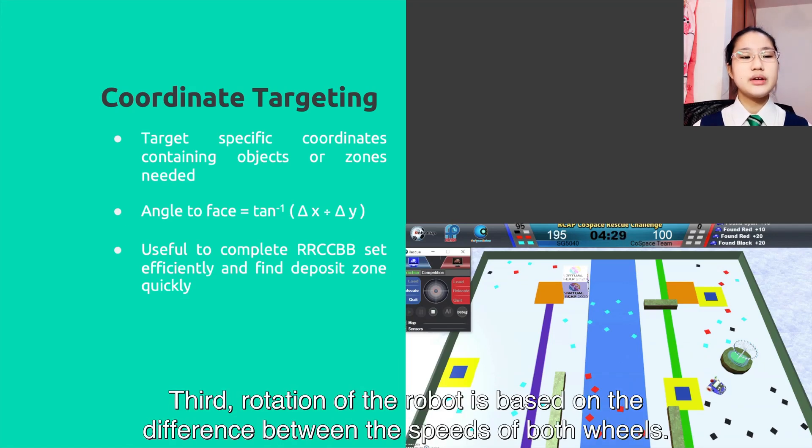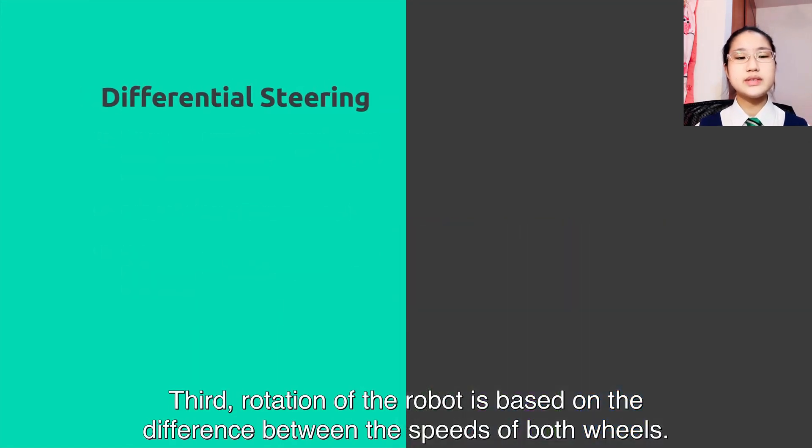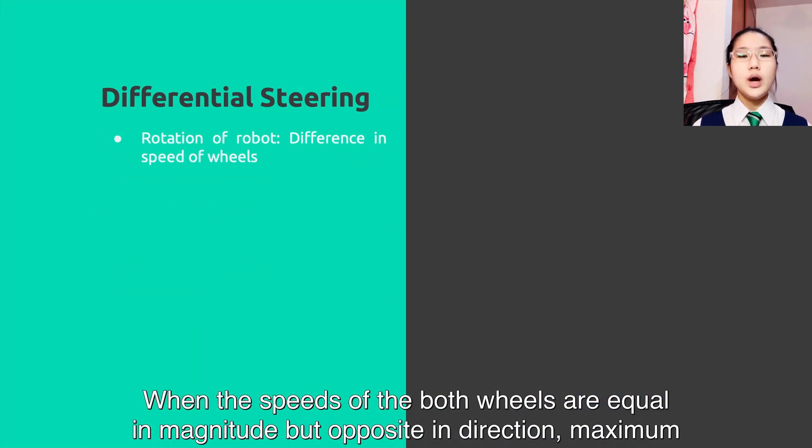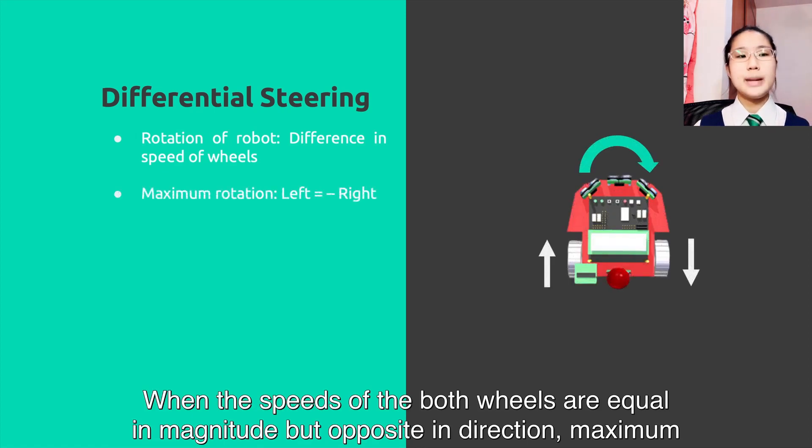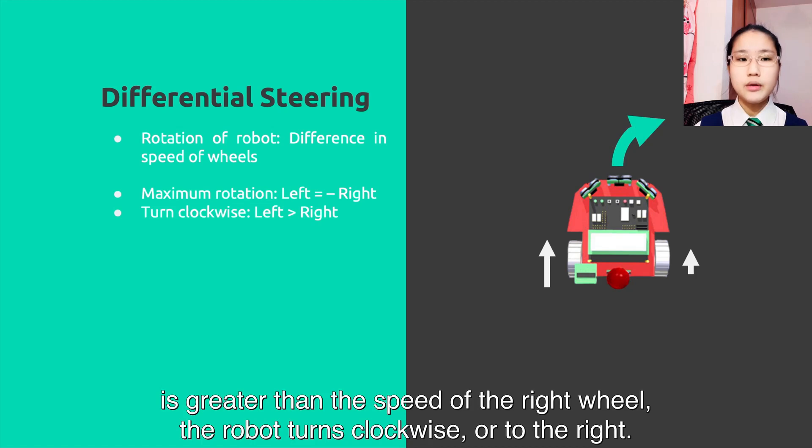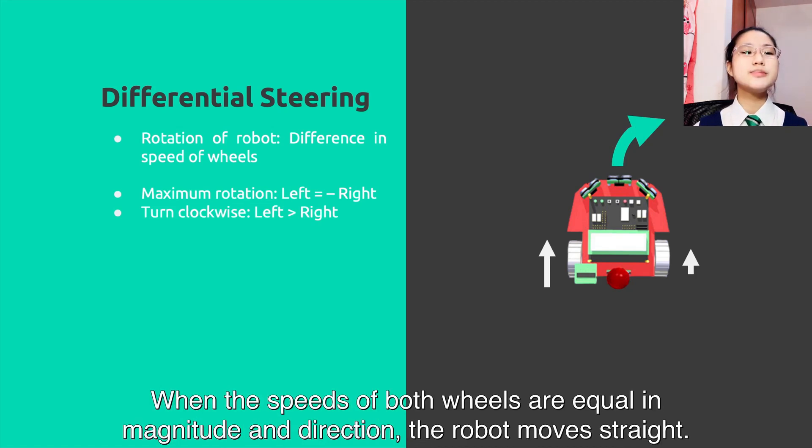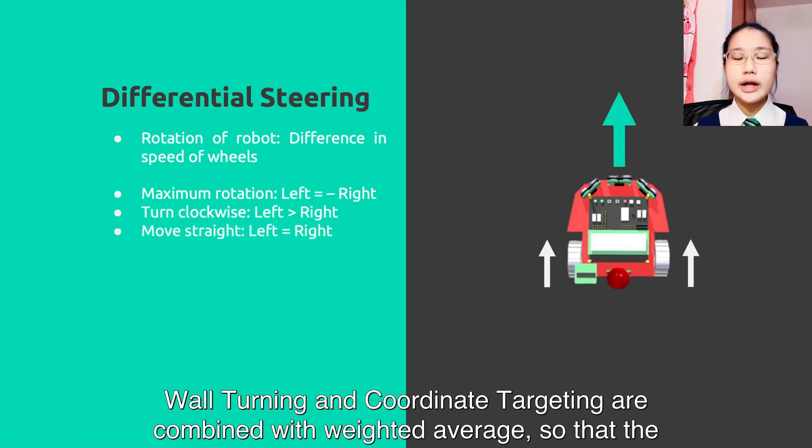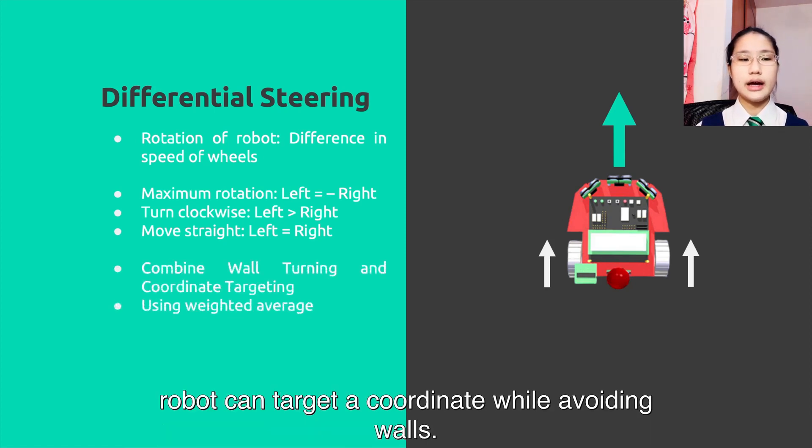Third, rotation of the robot is based on the difference between the speeds of both wheels. When the speeds of both wheels are equal in magnitude but opposite in direction, maximum rotation is achieved and the robot turns on the spot. When the speed of the left wheel is greater than the speed of the right wheel, the robot turns clockwise or to the right. When the speeds of both wheels are equal in magnitude and direction, the robot moves straight.